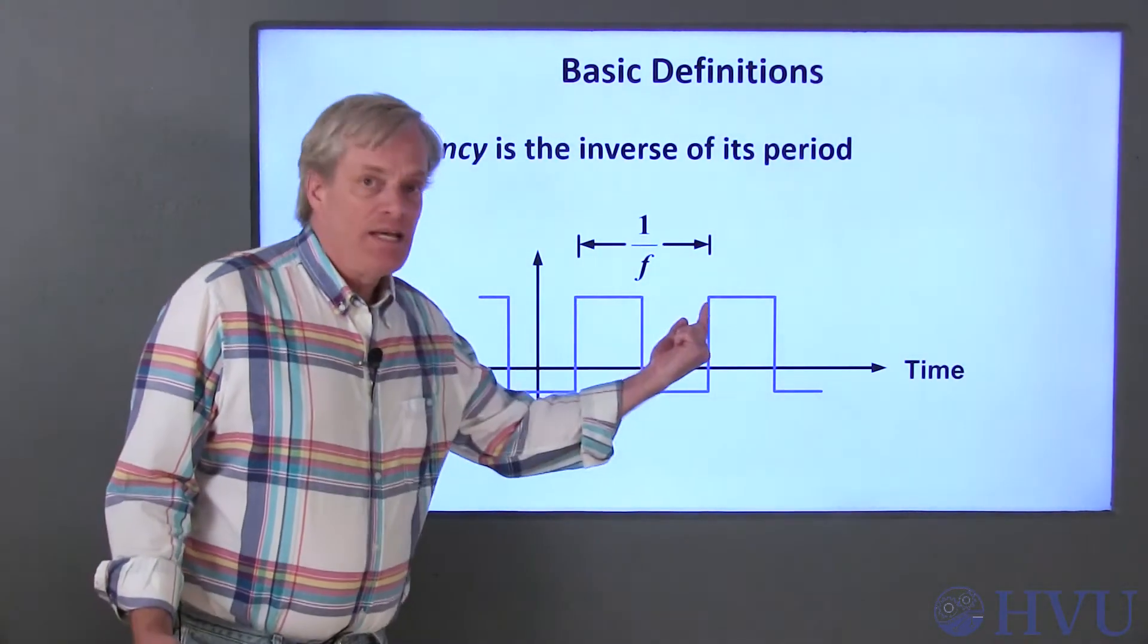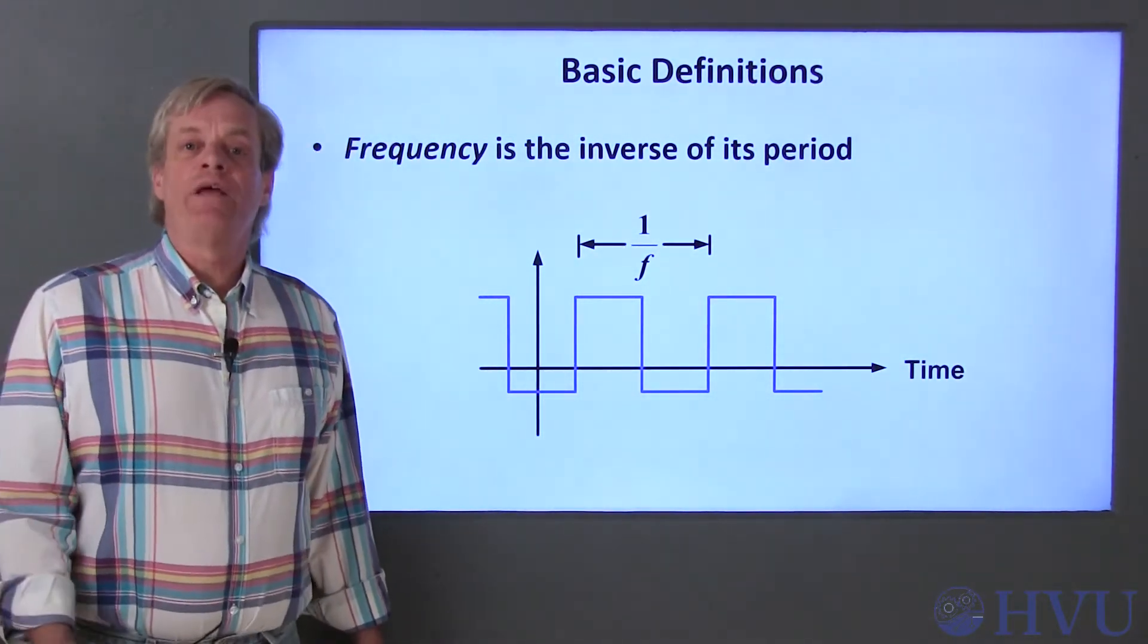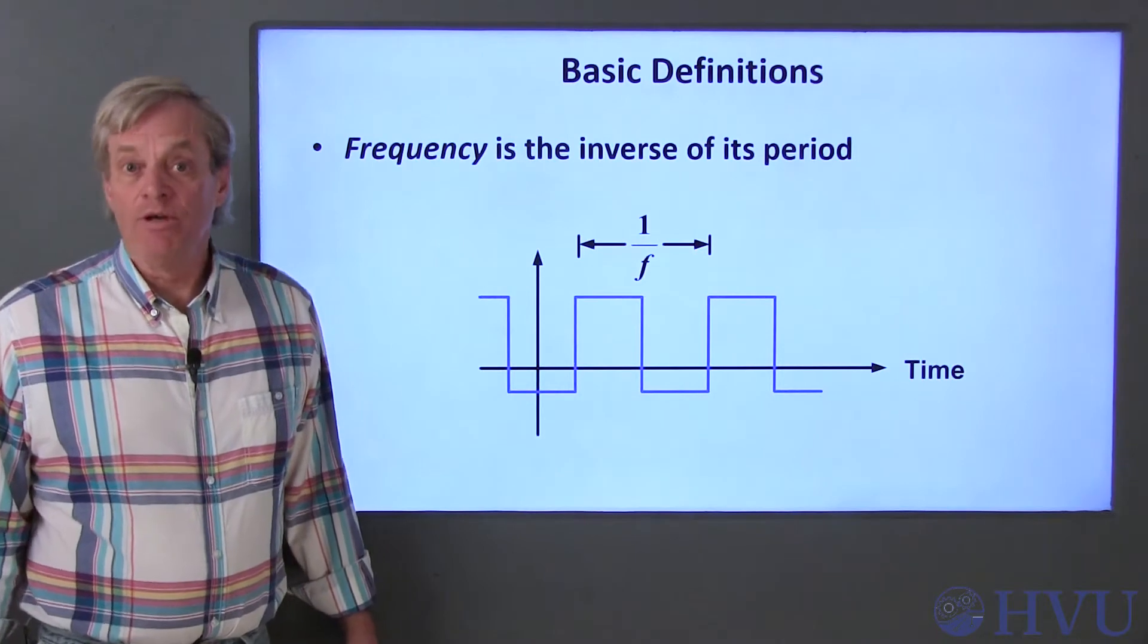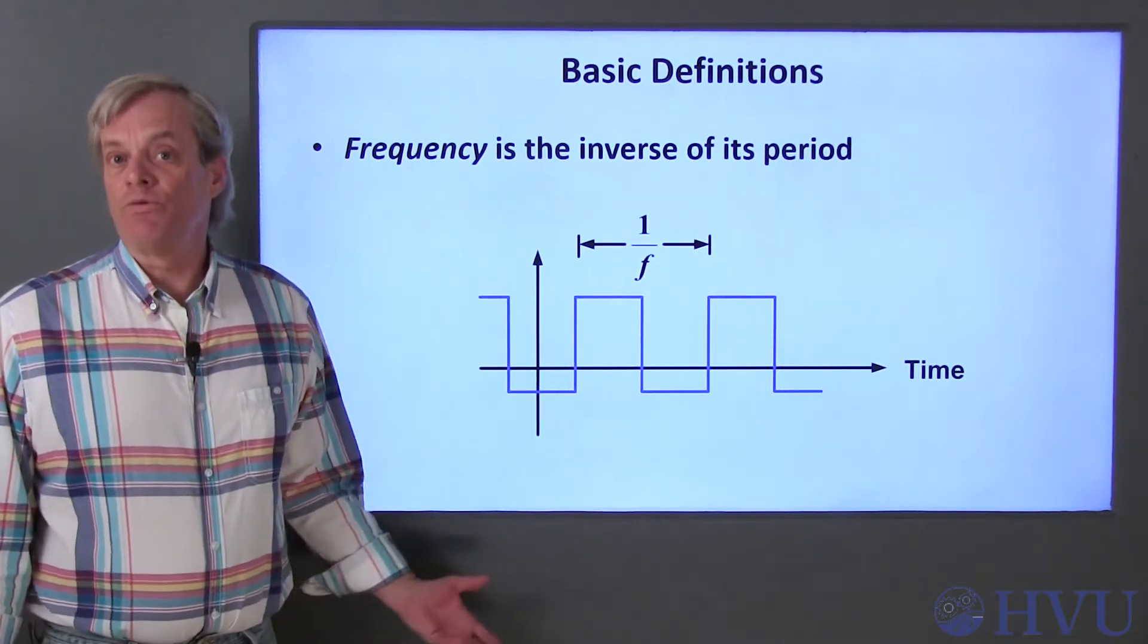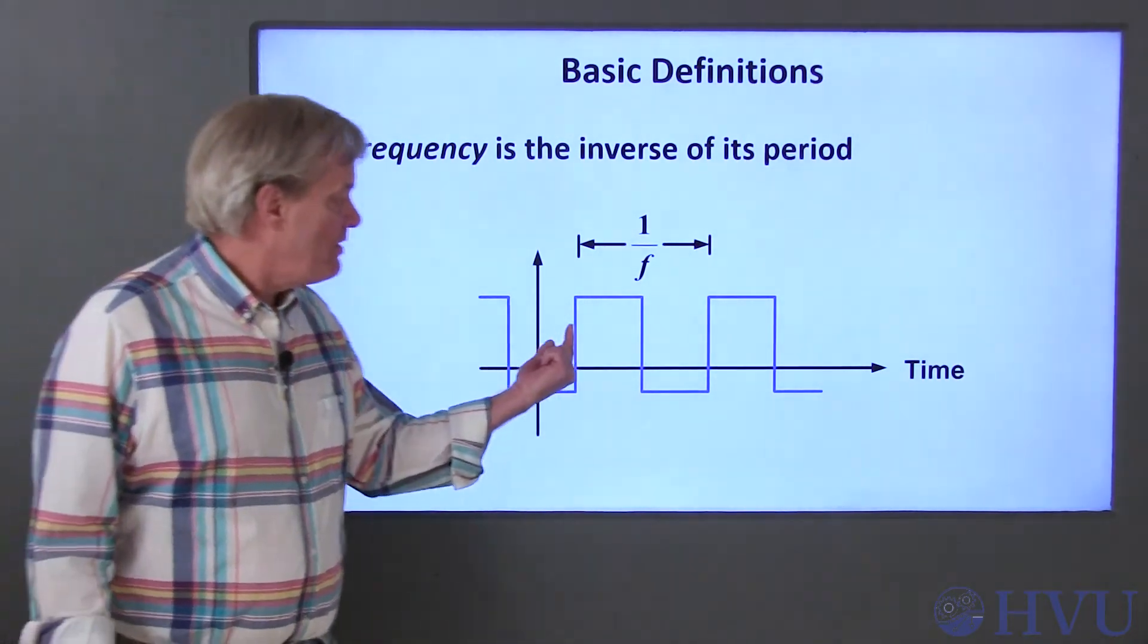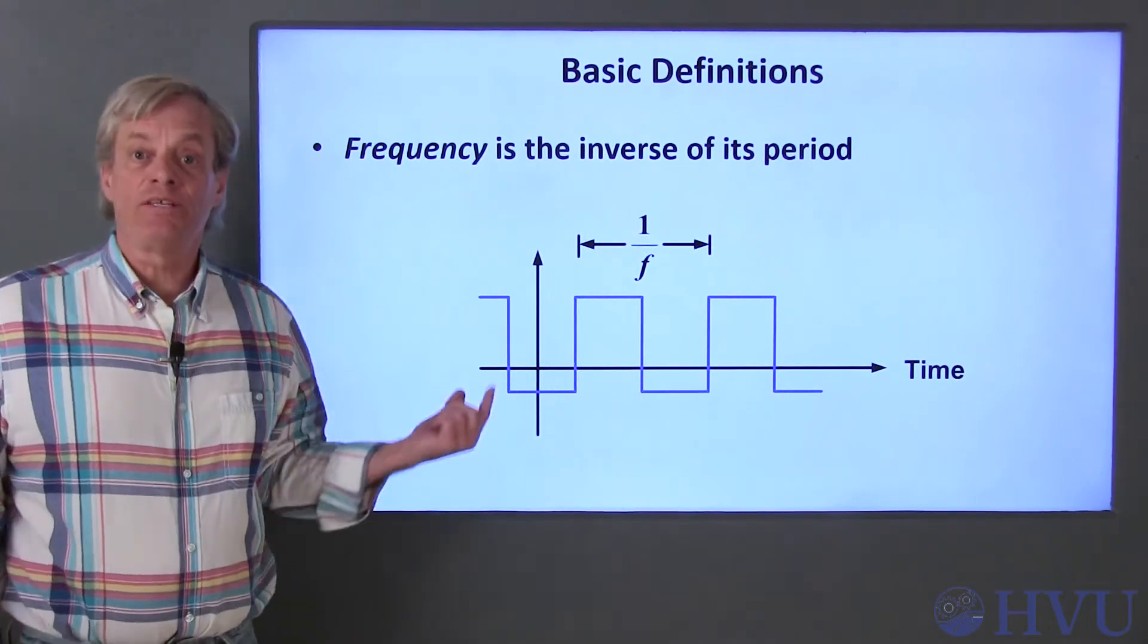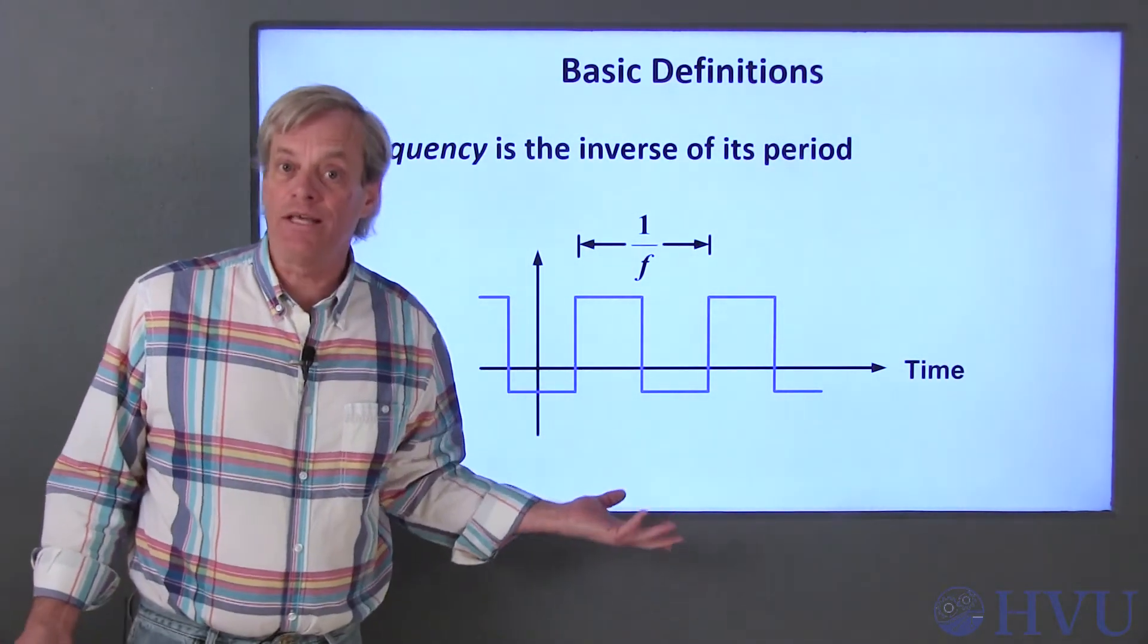The frequency of a signal is the inverse of the period. Frequency is the rate at which the signal repeats itself. Units of frequency are Hertz, which is the same as cycles per second. For example, if we have a waveform with a period of a half a second, the frequency is 2 Hertz because it repeats itself twice in one second.